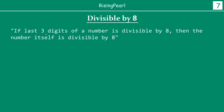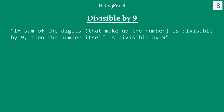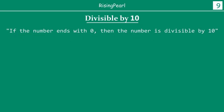Divisibility by 8: if the last three digits of a number are divisible by 8, then the number itself is divisible by 8. It's similar to the divisibility test by 4, but you look at the last three digits together. Divisibility by 9: if the sum of the digits that make up the number is divisible by 9, then the number itself is divisible by 9 — pretty much exactly the same approach as the test for 3.